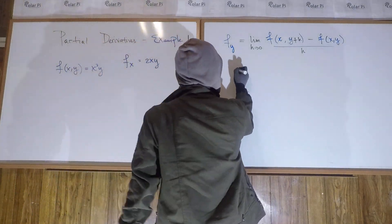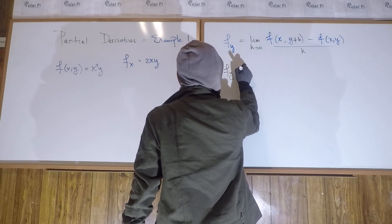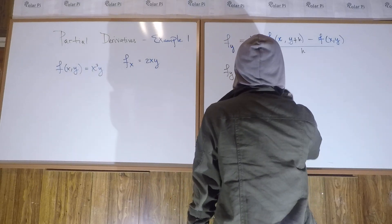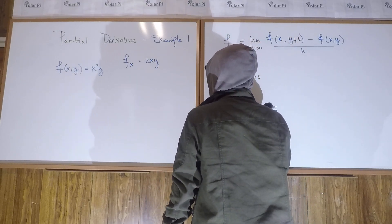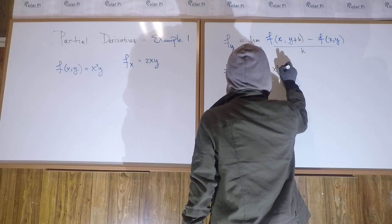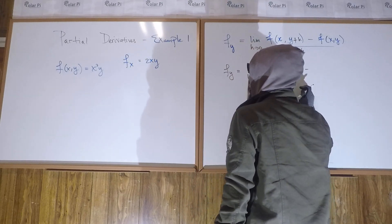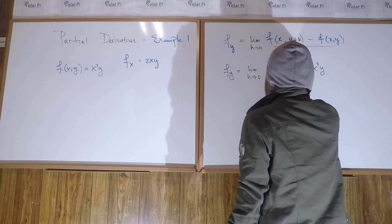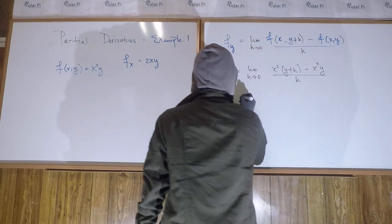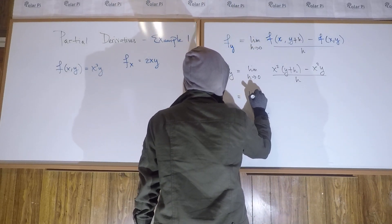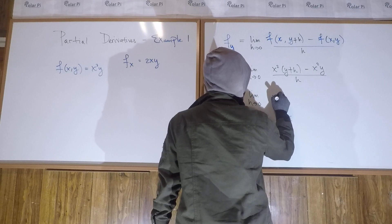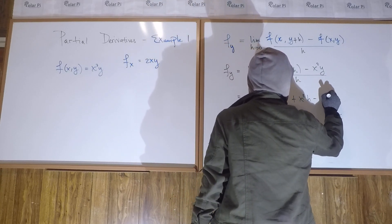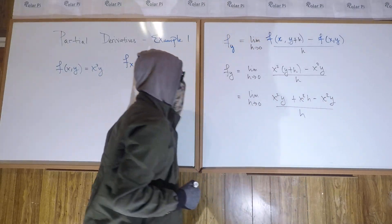So again, using this function, f y, the partial with respect to y, is the limit as h goes to zero of f of x comma y plus h is x squared times y plus h, minus f of x comma y is x squared y, all over h. So this is the limit as h goes to zero of x squared y plus x squared h minus x squared y, all over h.